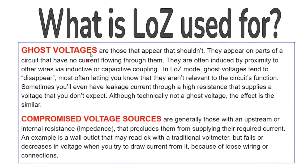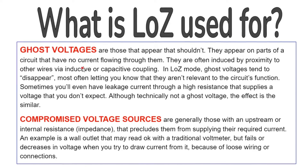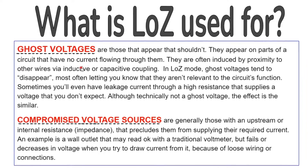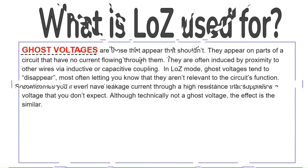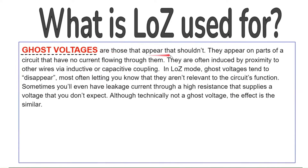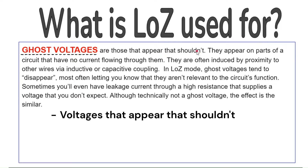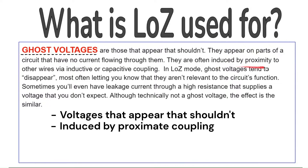Low Z can be used to detect ghost voltages and compromised voltage sources. Ghost voltages are those that appear that shouldn't. They appear on parts of a circuit that have no current flowing through them. They are often induced by proximity to other wires via inductive or capacitive coupling.